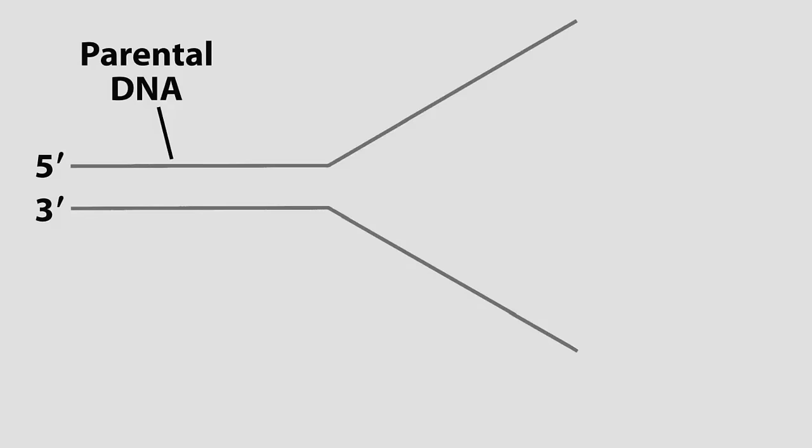This is a diagram showing how DNA replicates. This is the replication fork, and this is its direction of movement.